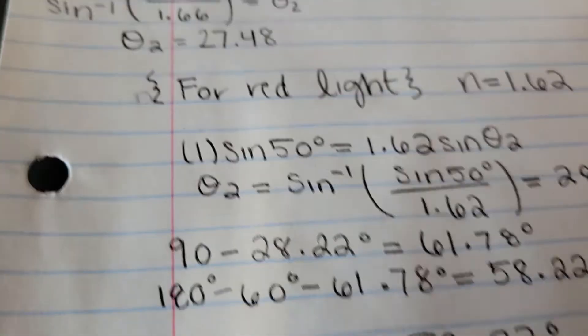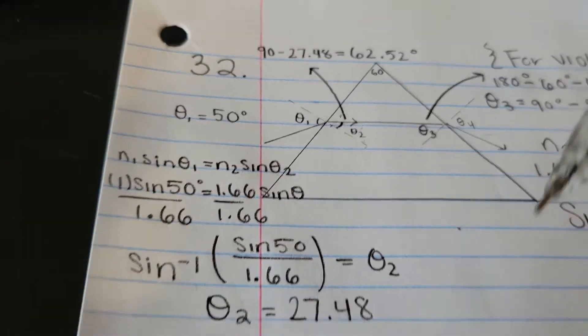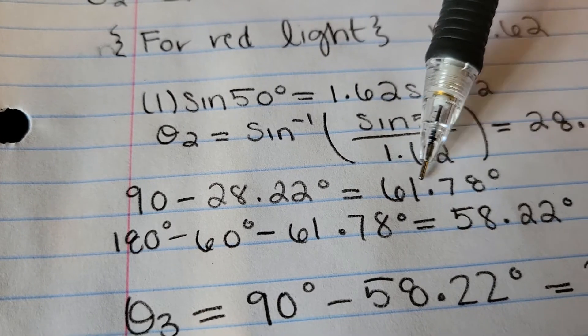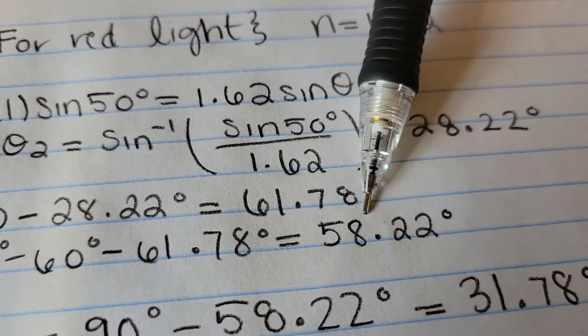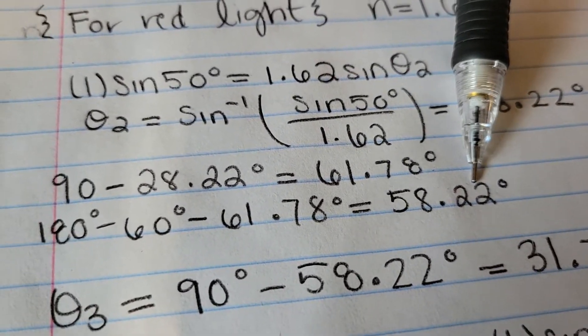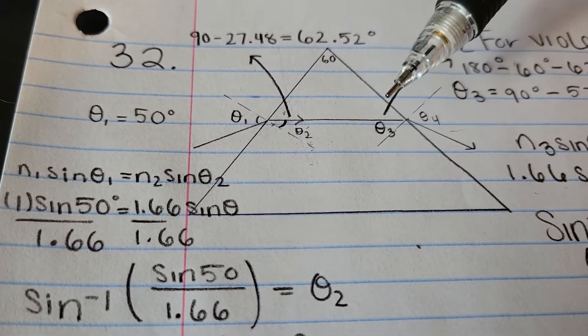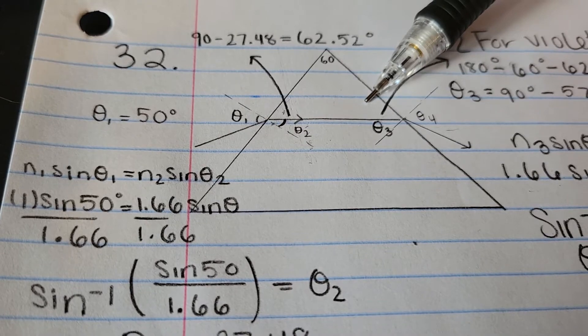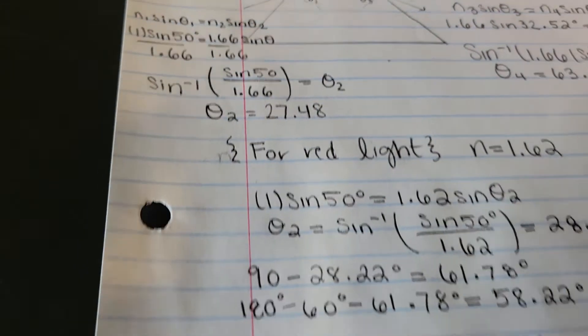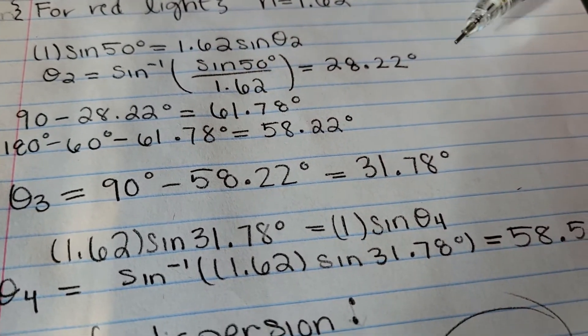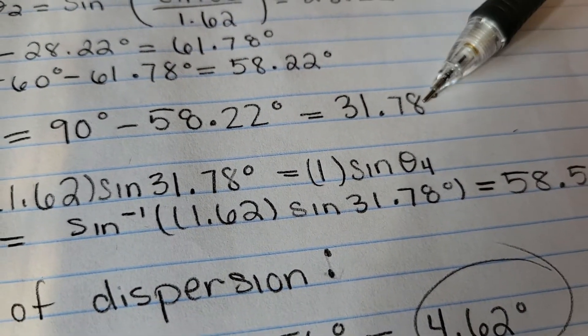Now to find this side of the triangle, I took 180 minus 60 minus the 61.78 that I got from here, and I got 58.22. So this is the 58.22, and now we have to find this angle. So we just subtract this by 90 and I got theta 3. That's what we're labeling it as, 31.78.